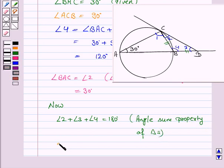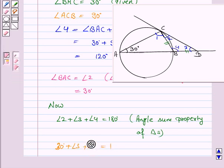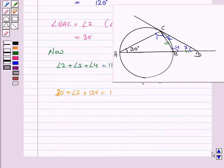Angle 2 is 30 degrees plus angle 3 plus angle 4 which is 120 degrees. So this implies angle 3 is 180 minus 150, which is 30 degrees.